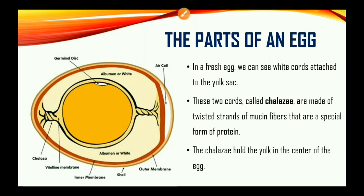Also, in a fresh egg, we can see white cords attached to the yolk sac. These two cords are called chalazae. They are made of twisted strands of mucin fibers, which are a special form of protein. The chalazae hold the yolk in the center of the egg. So whenever you crack the egg and the yolk is still in place with the two white cords, you know that is also a fresh egg.